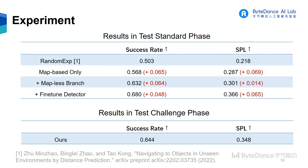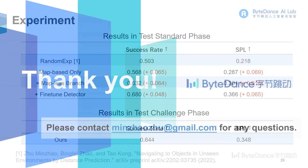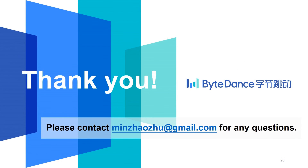The quantitative result shows that both the map-based method and the end-to-end branch contribute to a large improvement. Besides, after we fine-tune the semantic model on the training set, we also get a huge improvement. That's all. Thank you for listening.